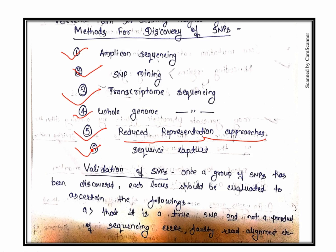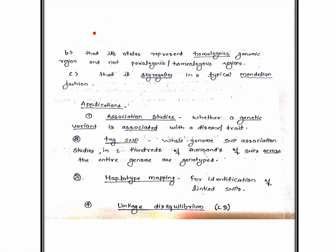After discovery, SNPs must be validated to confirm they are true SNPs and not products of sequencing error or faulty read alignment. Once a group of SNPs has been discovered, each locus should be evaluated to ensure: it is a true SNP and not a sequencing error; its alleles represent the homologous genomic region and not paralogous or homeologous regions; and it segregates in a typical Mendelian fashion. This is why paralogous and orthologous gene concepts were discussed earlier.